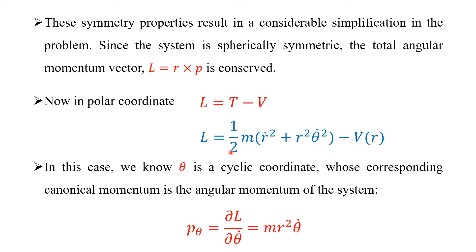In the Lagrangian, we differentiate with respect to theta-dot. The potential term vanishes. From the kinetic energy term, one-half m R-squared theta-dot squared, differentiating with respect to theta-dot gives 2 times theta-dot; the 2 and one-half cancel. So P sub theta equals m R-squared theta-dot, which is the angular momentum due to the theta component.